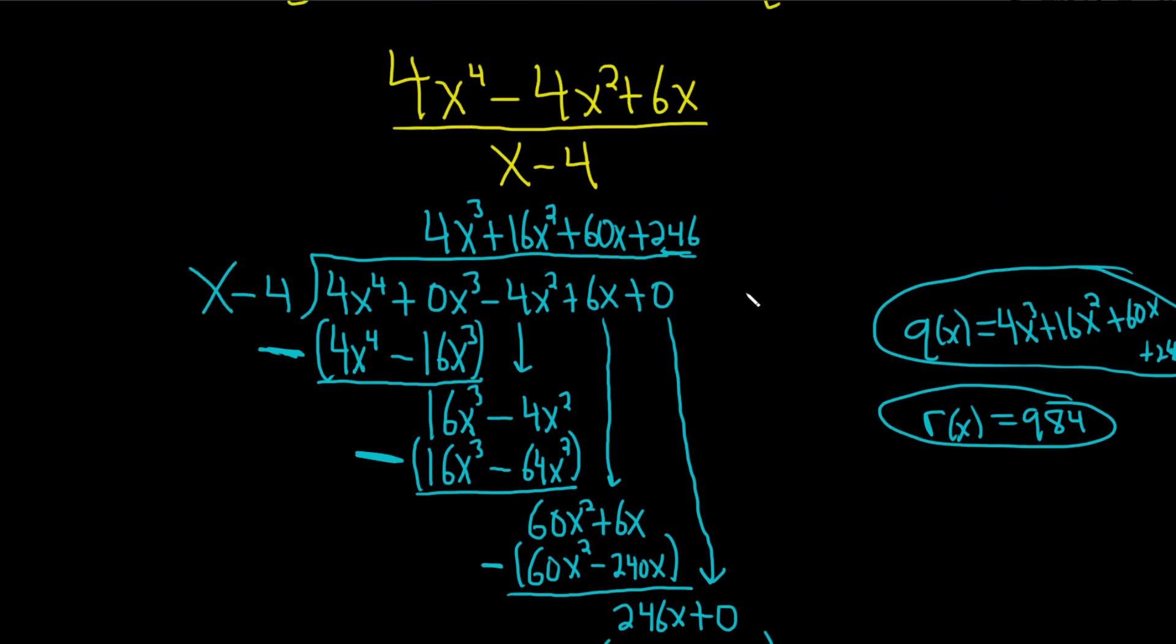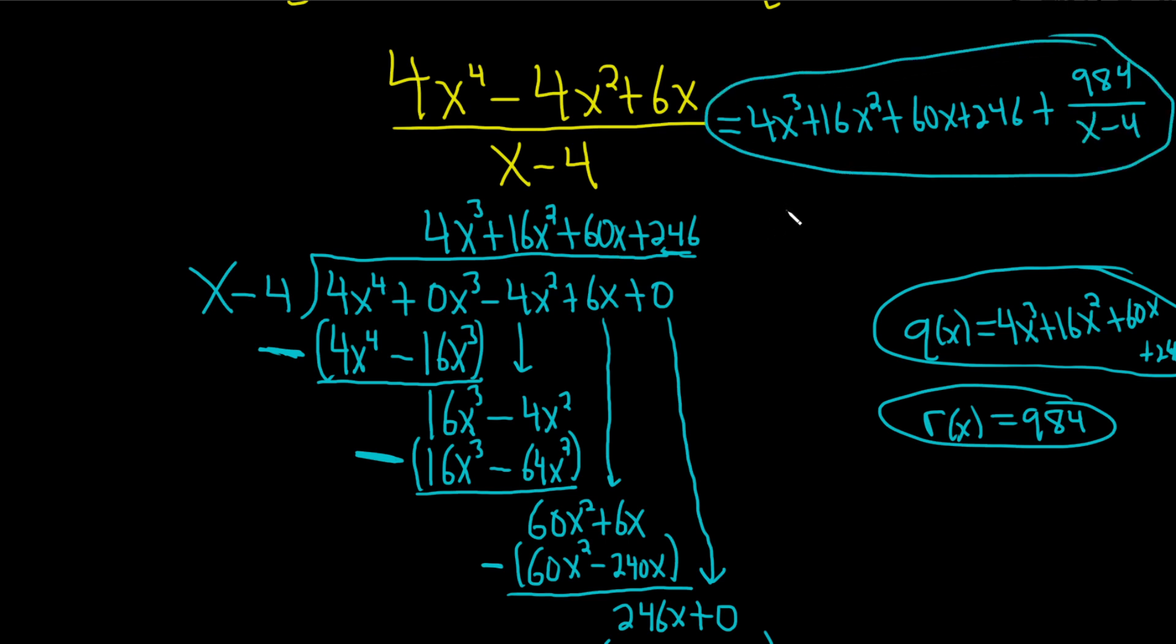However, I think it's better to do this. So this is actually equal to the quotient, 4x cubed plus 16x squared plus 60x plus 246. This is how you use it in calculus and stuff. You can take something complicated and write it like this plus the remainder, 984, over the divisor, x minus 4. You can always write it this way. It's always quotient plus remainder over divisor. And that's how you use it.